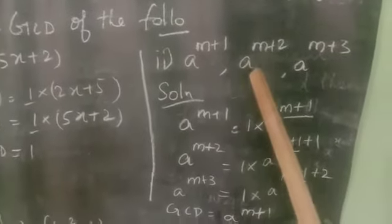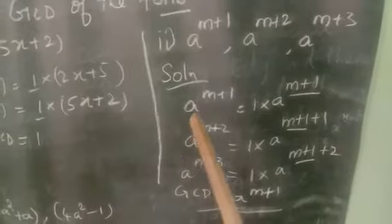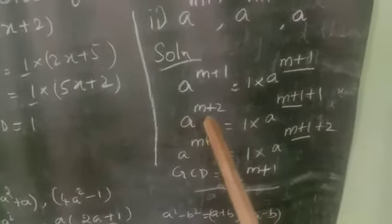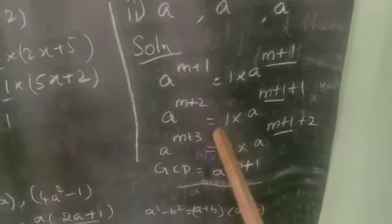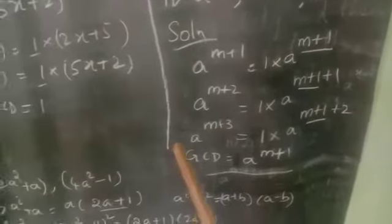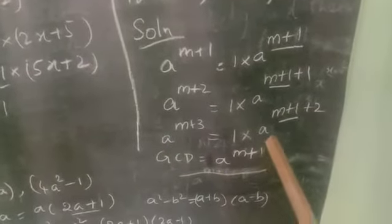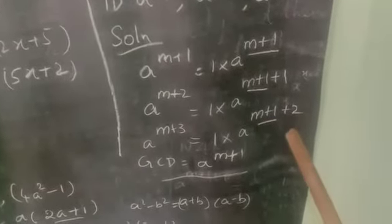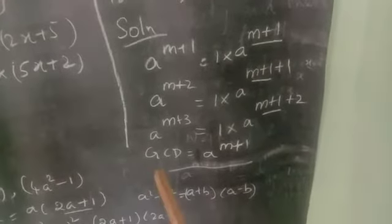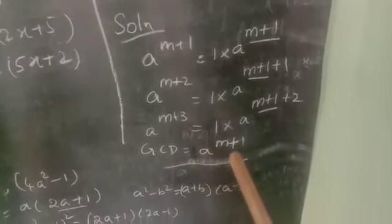Now we see the second sub-question: aᵐ⁺¹, aᵐ⁺², and aᵐ⁺³. aᵐ⁺¹ can be written as 1 × aᵐ⁺¹. aᵐ⁺² can be written as aᵐ⁺¹ × a. And aᵐ⁺³ can be written as 1 × aᵐ⁺¹ × a². So aᵐ⁺¹ is common in all three terms, and the GCD of those terms is aᵐ⁺¹.